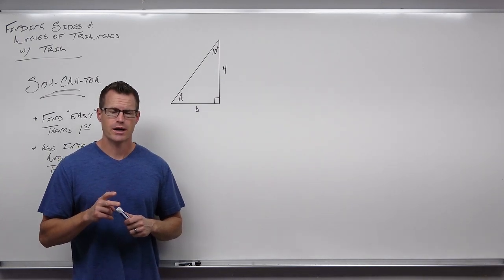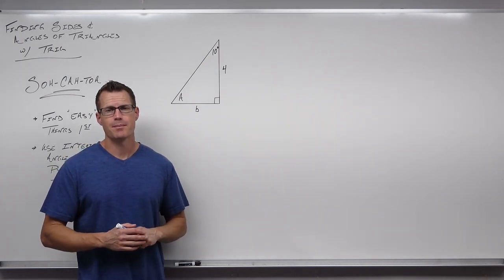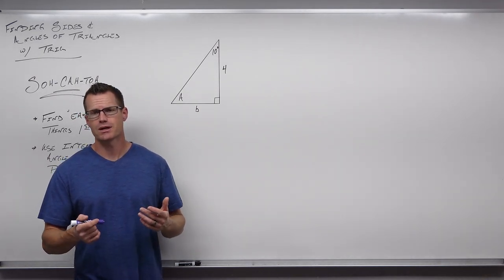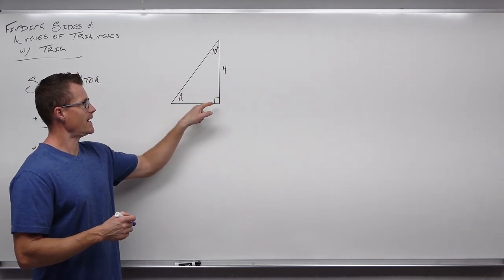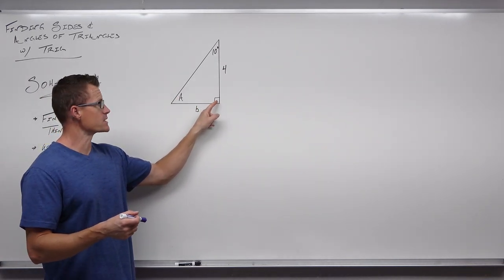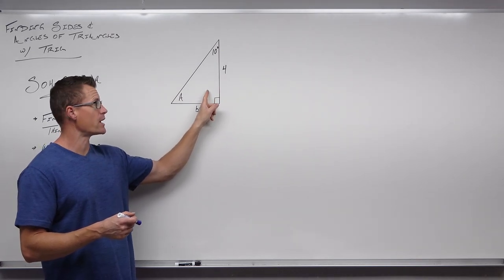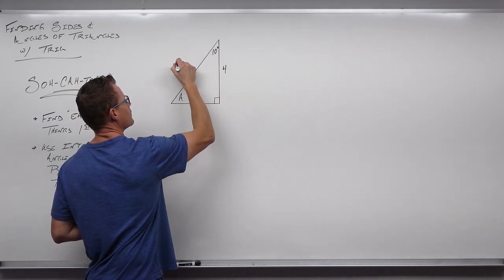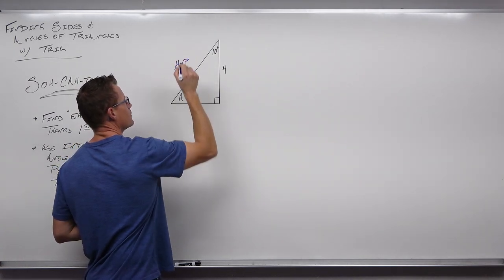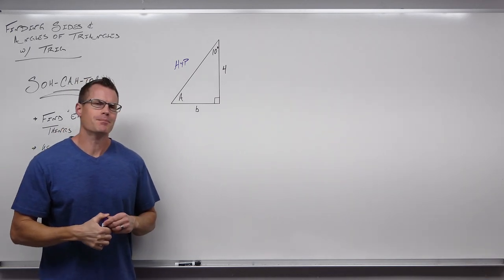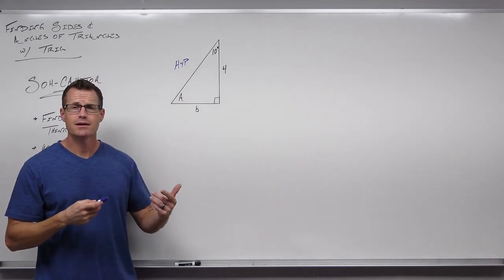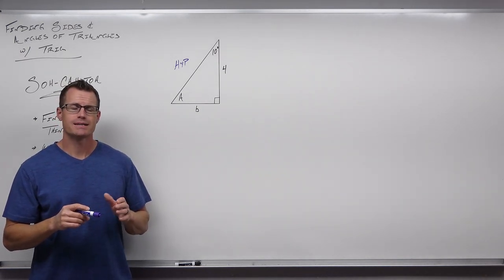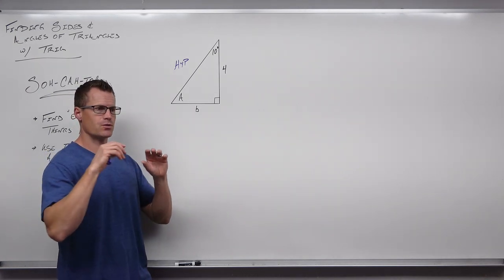The second thing I do on a right triangle is I always label the hypotenuse first before I do anything else — whether it's Pythagorean theorem or trigonometry, I'm labeling the hypotenuse. The 90-degree angle's opposite side is the hypotenuse, so I draw a straight line right through my triangle and label it. After that, I start looking to see if I can find anything else about this triangle before using trigonometry.